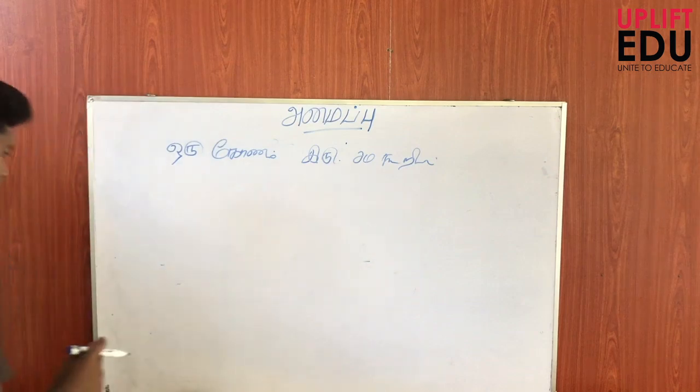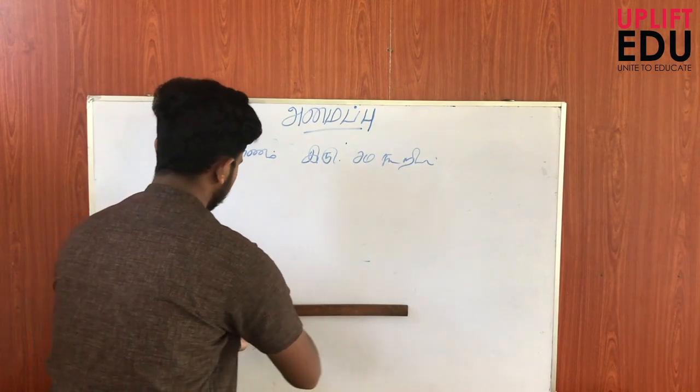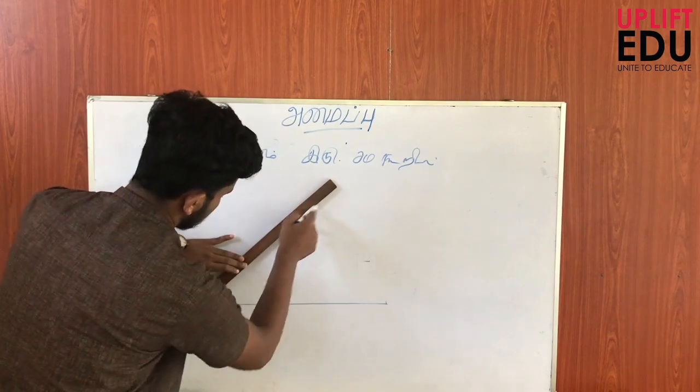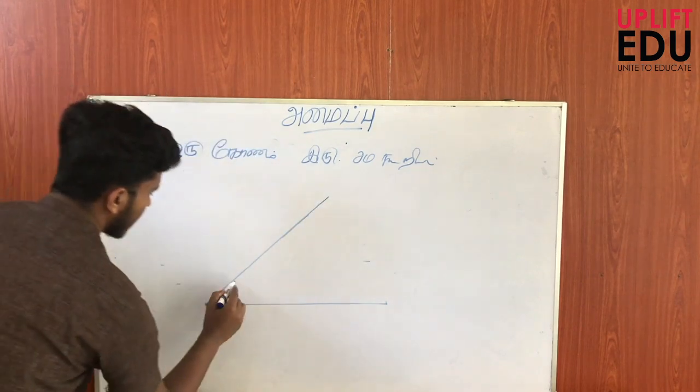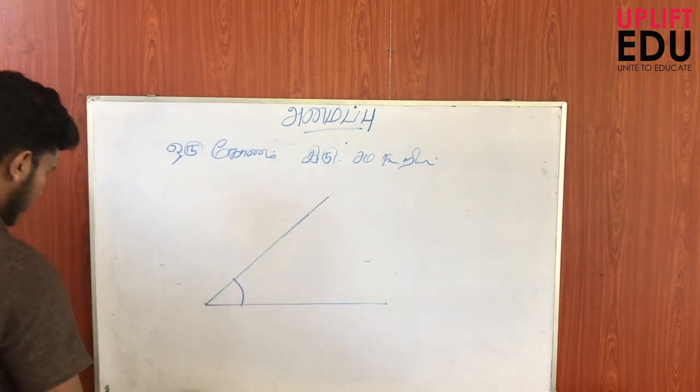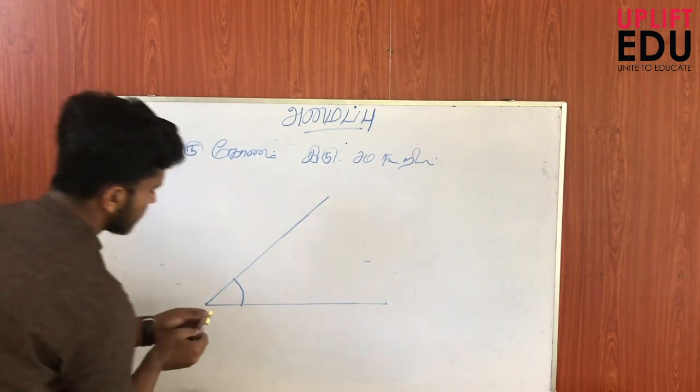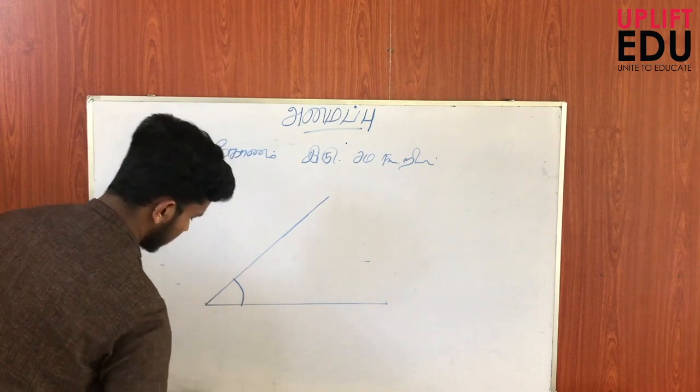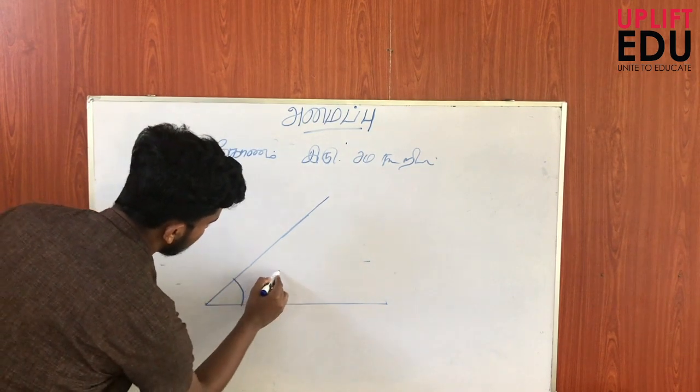One angle is 45 degrees. This angle is 45 degrees. This one will be revealed. If I get this one, it will be revealed.